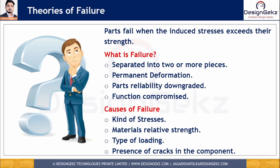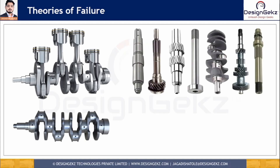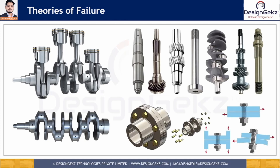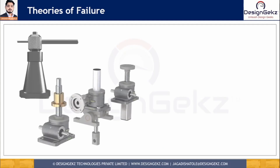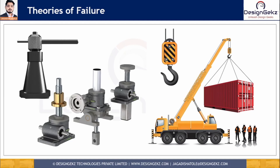Examples of such components include the IC engine crankshaft, shafts used in power transmissions, bolted and welded joints under eccentric loading, the spindle of a screw jack, screw jack components, and crane hooks and crane components — where failure may occur due to excess induced stresses, causing the part to not perform its intended function properly.